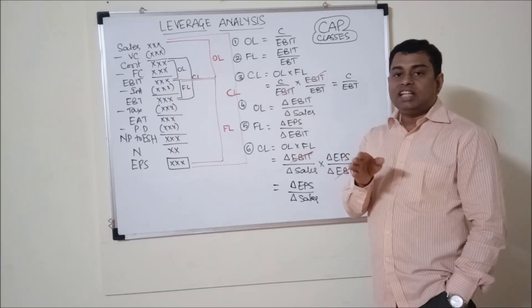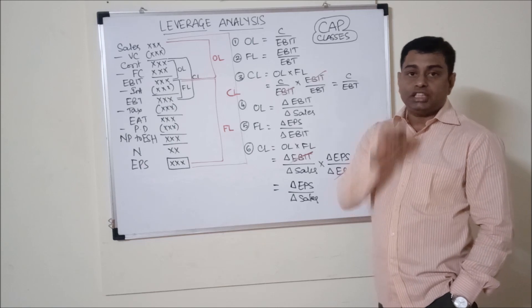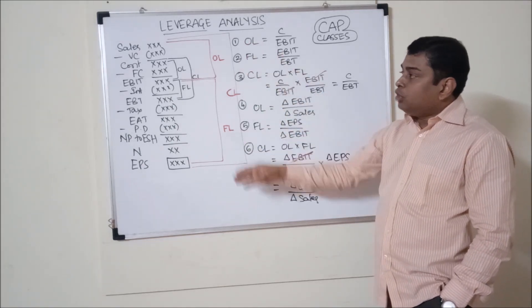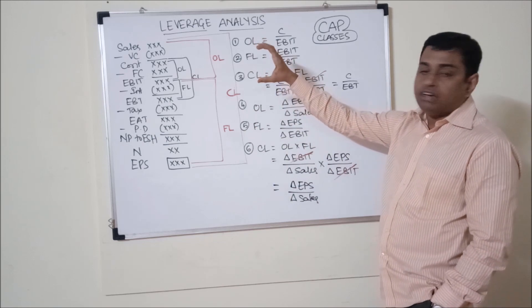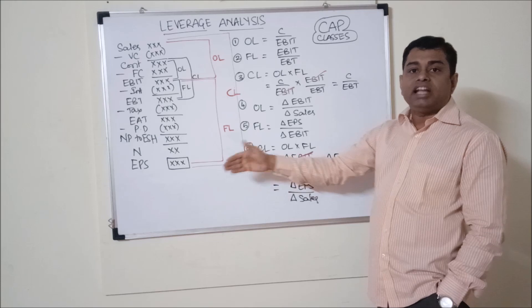So let us see the formula now. This is the last step before we go and solve some problems in leverage analysis. I am sure you might be knowing this formula. The first 4 or 5 lines show you have a marginal cost income statement and the full statement is calculation of EPS.